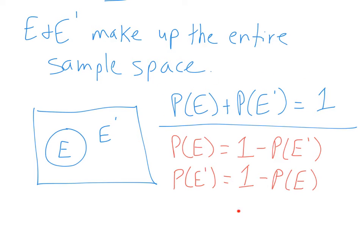That version of the formula is true but not that useful. Here are the useful versions: if you want to find the probability of some event and you know the probability of its complement, you can take one and subtract off the probability of the complement to get the probability of E. We get this by taking the original formula and subtracting P(E') from both sides. Similarly, if you want the probability of the complement and you have the probability of the event, P(E') equals one minus P(E). An event and its complement make up the entire sample space, so if you have one piece you can always find the other using one minus that piece.